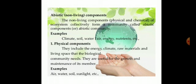Non-living components, that is abiotic factors, are of two types: physical and chemical. Physical components include the energy, climate, raw materials and living space that the biological community needs. They are useful for the growth and maintenance of its members. Examples are air, water, soil, sunlight, minerals, water vapors, etc.